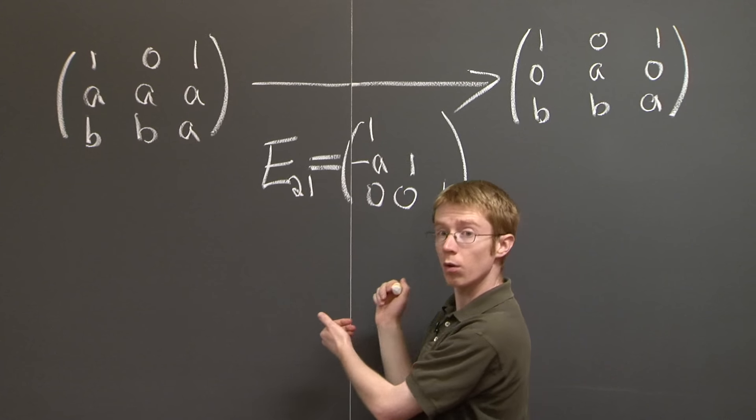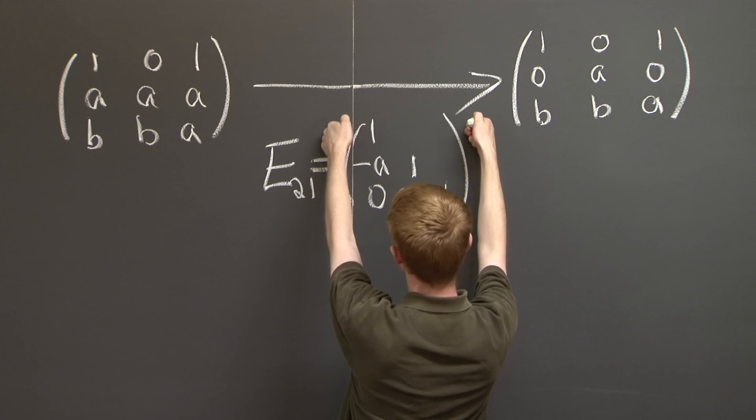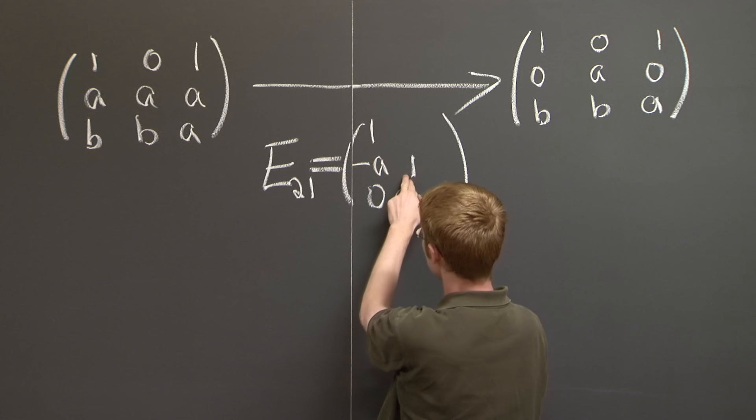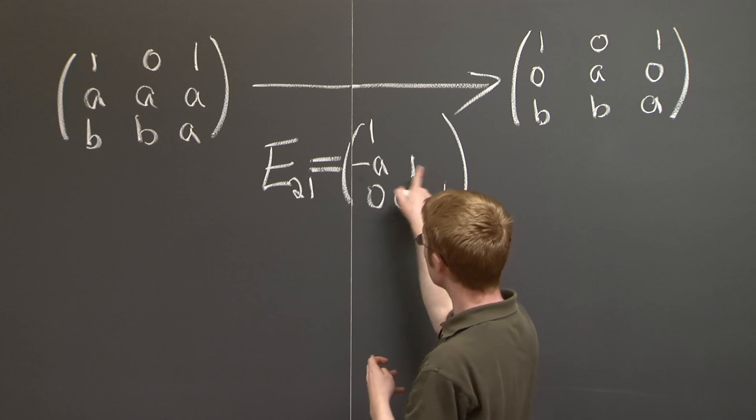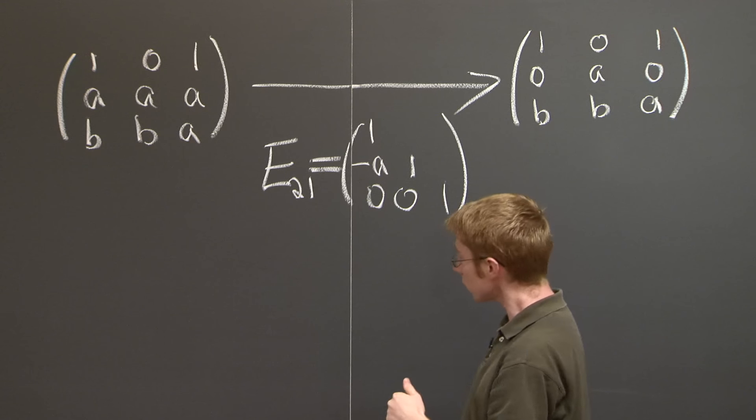remember how multiplication on the left works. I replaced the first row by just the first row. I replaced the second row by the second row minus a times the first row. So you can just read off from these rows which operations I did.